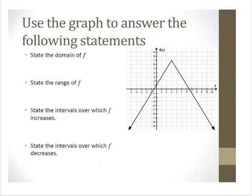What about domain and range? The domain is the set of all valid inputs for the function. We see arrows going all the way to the left and right with everything connected in between, so the domain is all real numbers: (−∞, +∞). For the range, the arrows keep going down but there is a definite top at y = 7, so the range is (−∞, 7].